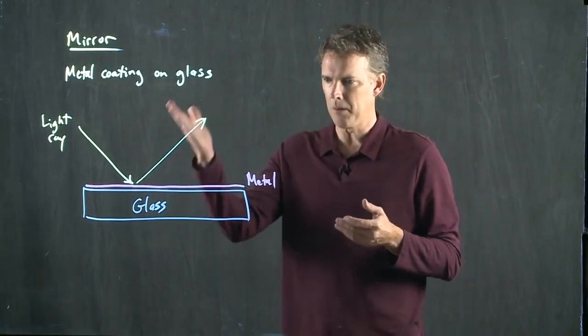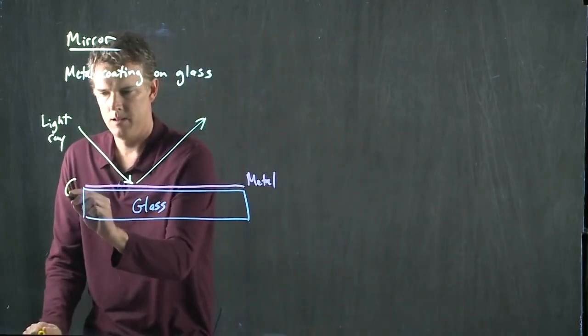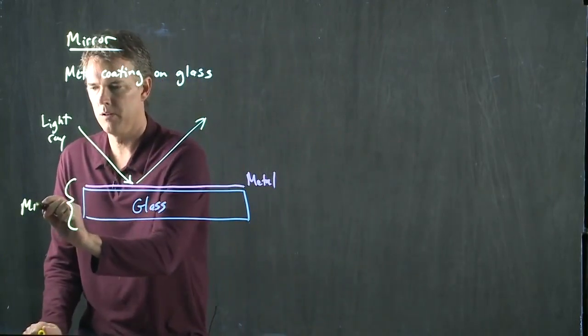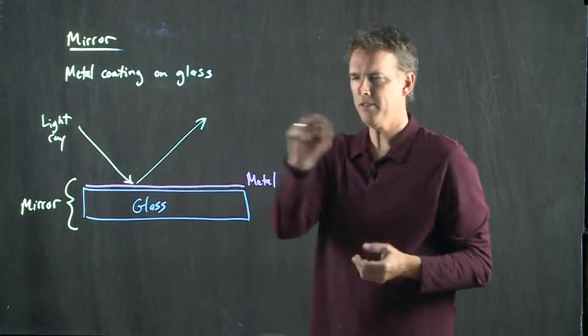Why does light bounce off of this mirror? The combined two things here, the glass and the metal, is what constitute the mirror. Why does that happen?